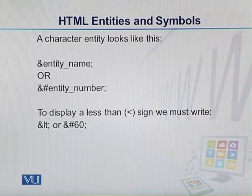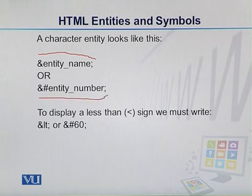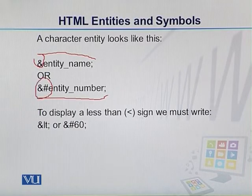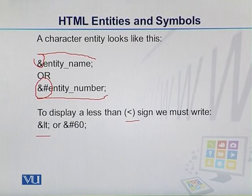If we want to display any entity, we have two ways to do it. Either we write the name of the entity, or we mention the number of the entity with an ampersand symbol. If we write the number of the entity, it will be ampersand and hash. For example, if we want to display the less than sign, we can use &lt; which is the name of the entity, or use the number of the entity.